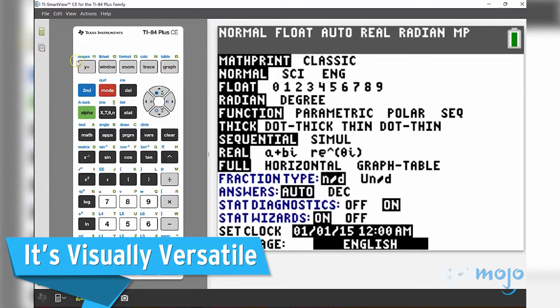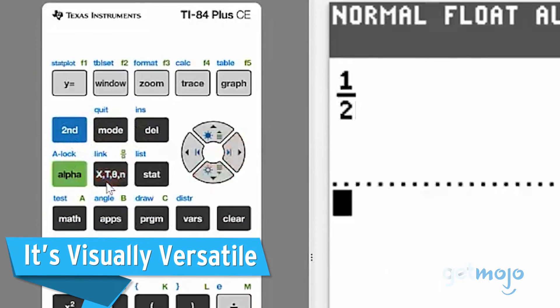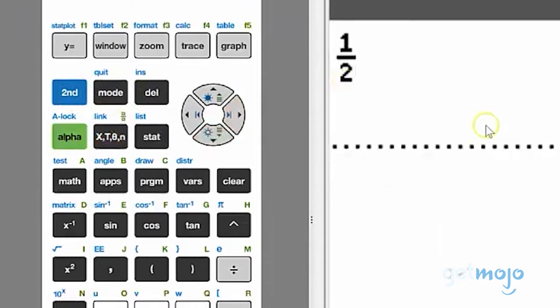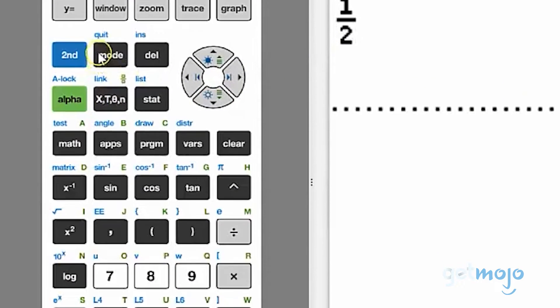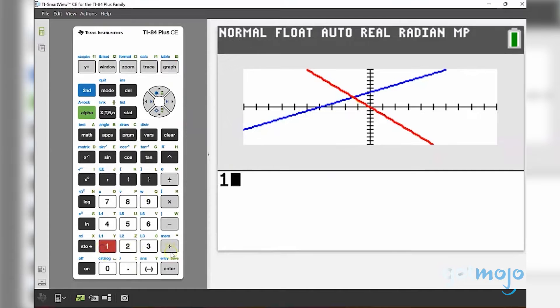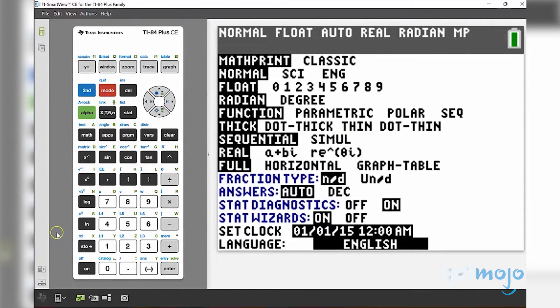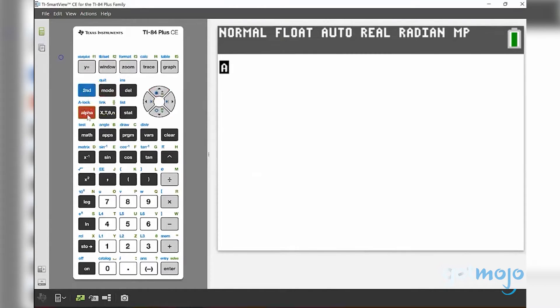It's visually versatile. The TI-84 Plus CE offers user-friendly features like Math Print and Classic Mode to view calculations and equations in the way that makes the most sense to you. Math Print displays inputs and outputs just as you'd see them in textbooks, making it easier to understand complex equations.